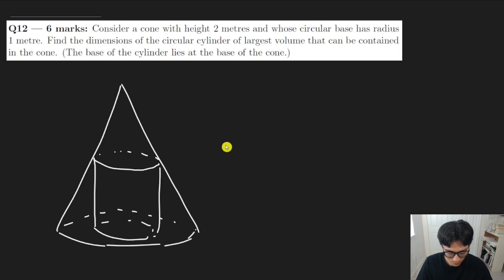Now, what do we know about this? Well, we know that the height of the cone is actually two meters. So this entire height here is two meters. And we also know the radius of the cone is one meter. So this entire radius is one meter like that.